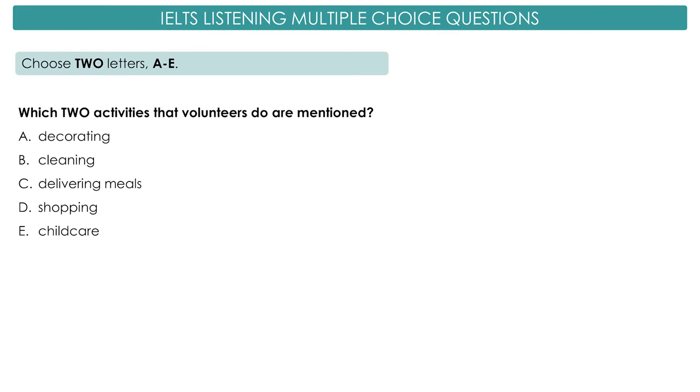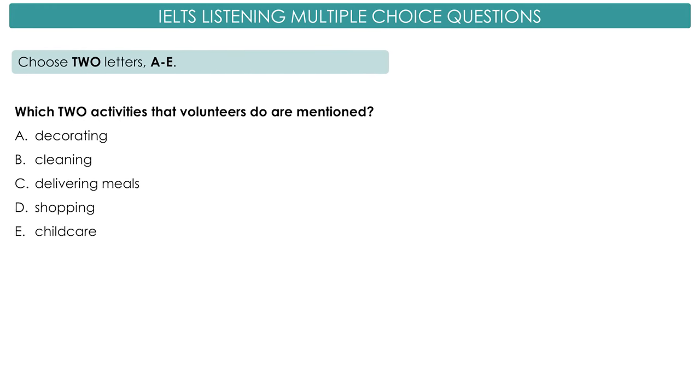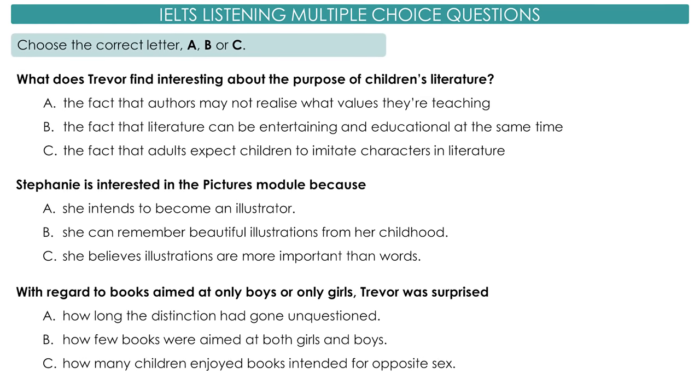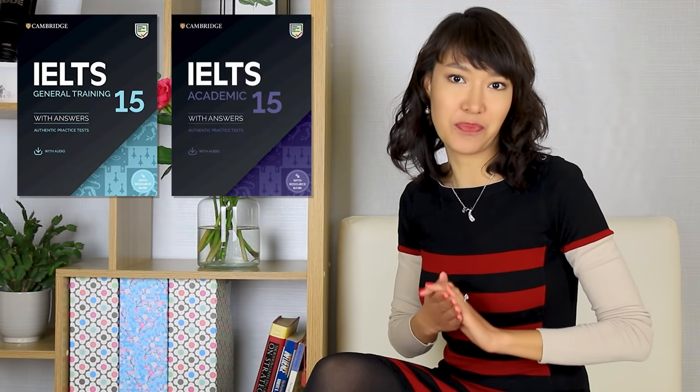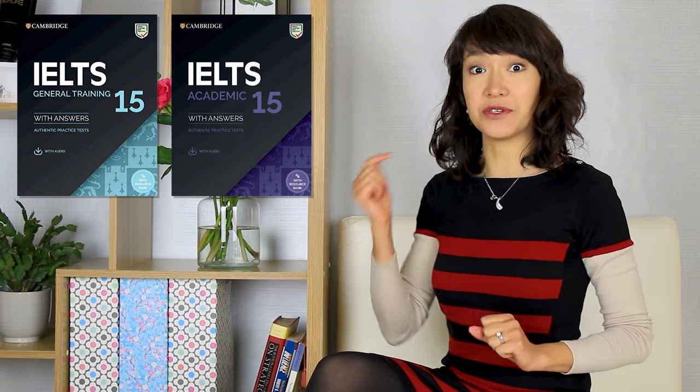Multiple choice questions look like this: choose two letters from A to E, or choose the correct letter A, B, or C. The questions we're using today are from Cambridge Practice Tests. These are the best books because they're written by the same organization that creates real exam papers. Number 15 is the most recent version and in July 2021 we're going to get number 16. I'm going to link these books in the description.